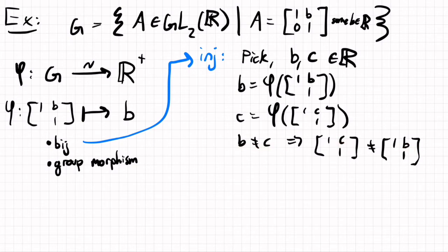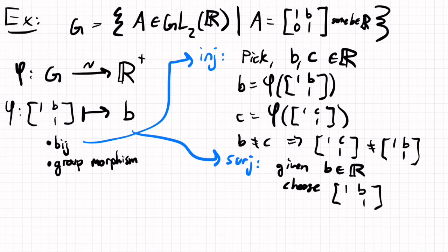Likewise, surjectivity is similarly not too hard. Given B in R, choose matrix [1, B, 1]. So that's surjectivity.